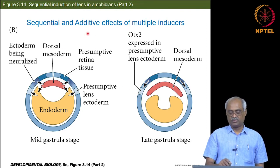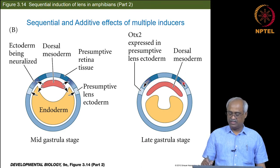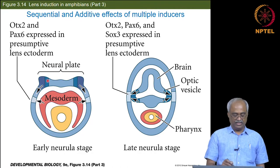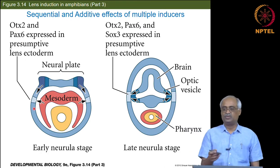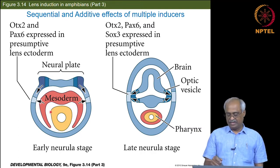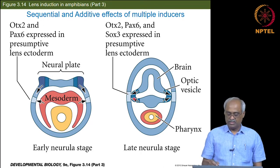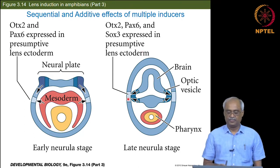There are sequential and additive events. First OTX2 comes, but that alone is not going to make the lens. Then further signaling from the adjacent ectoderm — which will eventually form the retina — induces these cells, along with mesoderm signals, to start expressing Pax6. Only after getting Pax6 is the ectoderm going to be competent to receive the optic vesicle signal. At a later stage, the optic vesicle signal — believed to be a BMP, bone morphogenetic factor — induces SOX3 expression.